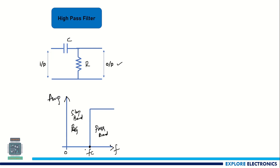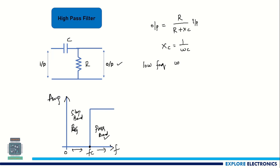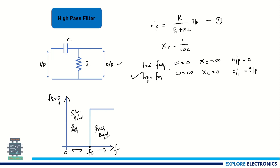From 0 to Fc signals are rejected, and above Fc signals are passed. The output expression for the high-pass filter is dependent on R and Xc. Taking the two extreme cases: Xc equals 1 divided by ωC. For a low-frequency signal, ω equals 0, so Xc is infinite — and in the expression, the output equals 0. For high-frequency signals, ω equals infinity, so Xc becomes 0, and the output equals the input, meaning the high-pass filter passes all high-frequency signals as-is.